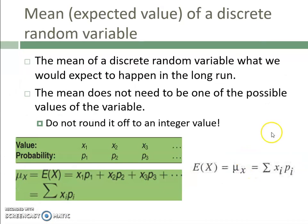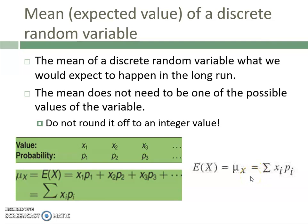To calculate the expected value, also known as the mean of a discrete random variable, it tells us what we'd expect to happen in the long run. The mean does not need to be one of the possible values of the variable, and you should not round it to an integer. The calculation is simple: multiply each x value by its corresponding probability, then add up all those products. We're not dividing because the probabilities sum to one.